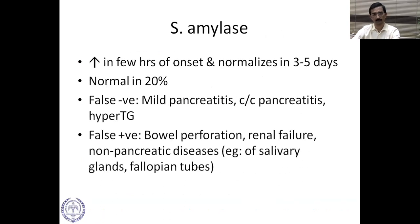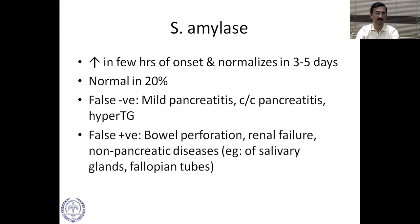Serum amylase rises within a few hours of onset and normalizes in three to five days. It is normal in 20% of patients with acute pancreatitis — causes include mild pancreatitis, chronic pancreatitis, and hypertriglyceridemia. False positives can occur in bowel perforation, renal failure, and non-pancreatic diseases such as those of the salivary gland and fallopian tubes.